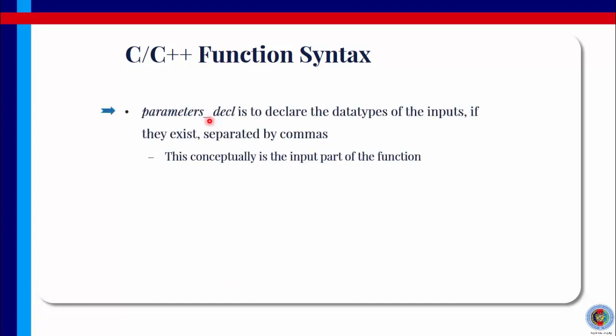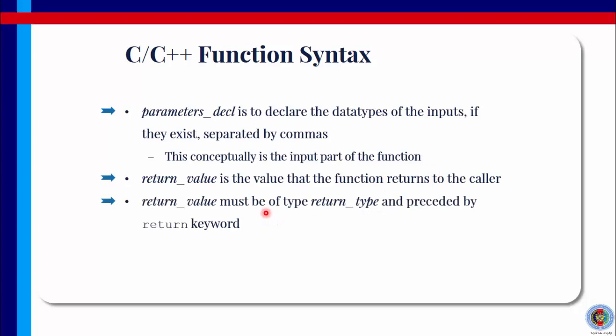The parameters declaration is the list of the variables with the data type of it that is considered the input to the function, if they exist. Which means if the function receives an input, we need to list the input as parameters declaration. This is conceptually the input part of the function. Return value is a value that the function returns to the caller. So if we can recall just now the example of the sine function, if the input is 30 degrees, then the return value is 0.5. Return value must be the same type as the return type. Otherwise, you will get a syntax error. And it has to be preceded by the return keyword.